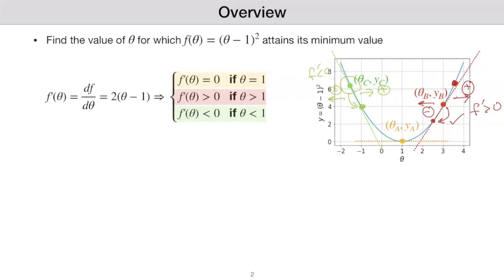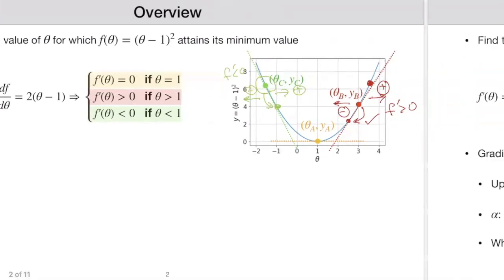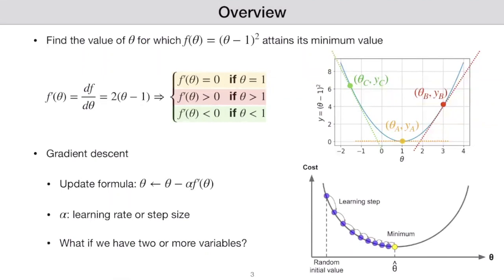So here we basically know what gradient descent is. Gradient descent: the basic idea is that we're going to start at some point as some random or initial value, and then we take steps to get closer and closer to the minimum value. It is not guaranteed to get exactly to the minimum point, but if you choose the parameters correctly, you will get close to the minimum value and have a good solution.